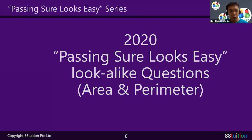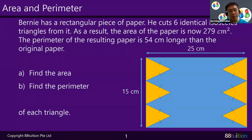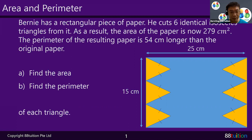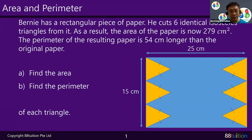Welcome to the 'Passing Sure Looks Easy' series, 2020 edition. We'll be looking at area and perimeter. Bernie has a rectangular piece of paper. He cuts six identical — identical means same — isosceles triangles from it. As a result, the area of the paper is now 279 square centimeters. The perimeter of the resulting paper is 54 cm longer than the original. Part A: find the area of each triangle. Part B: find the perimeter of each triangle.